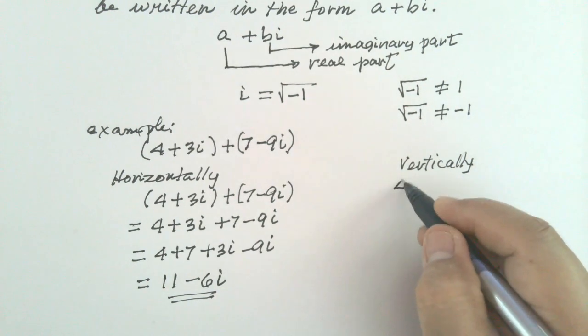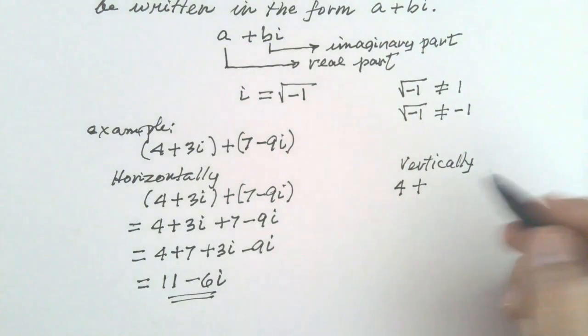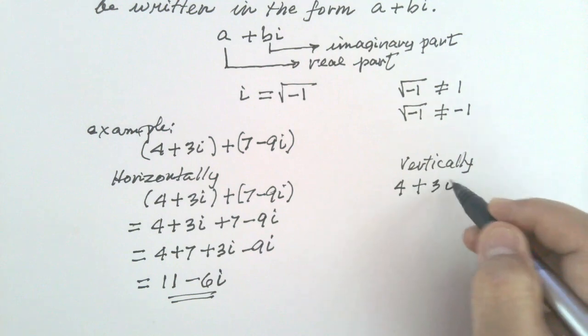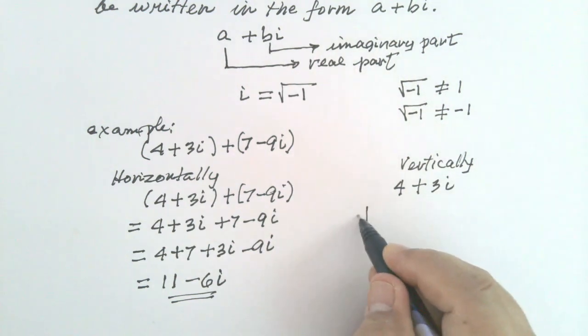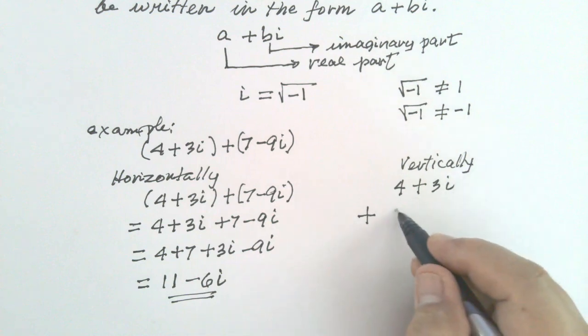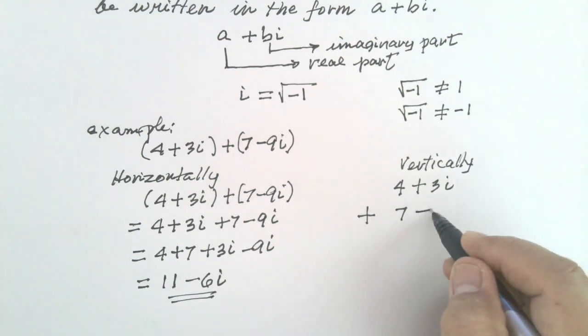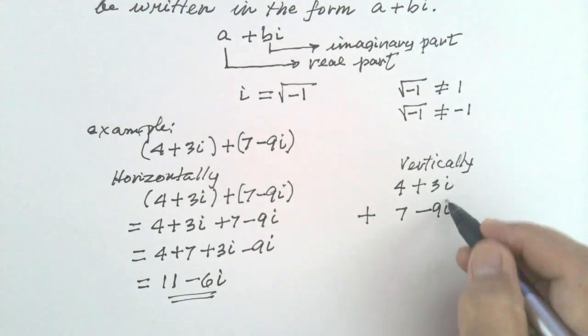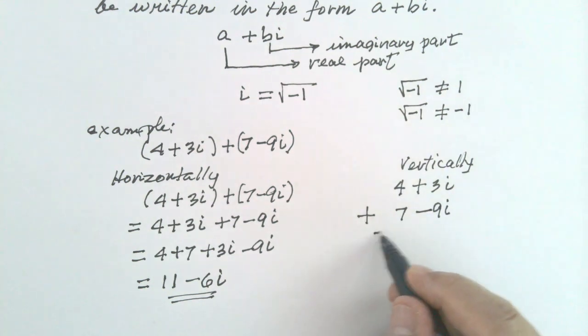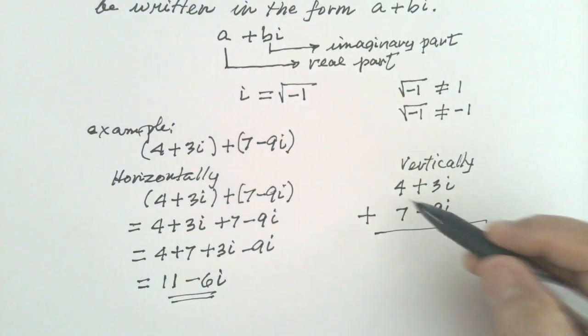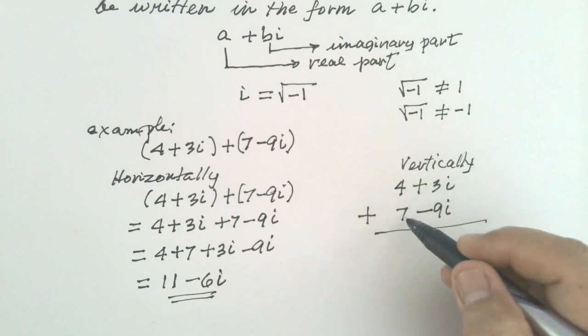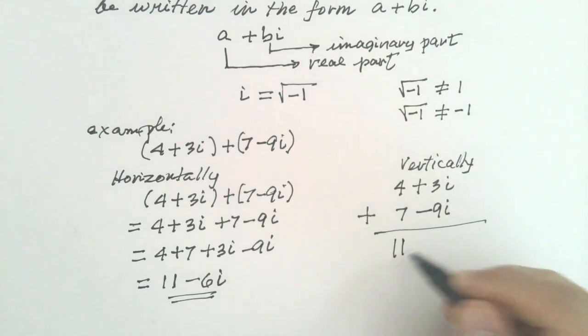So, 4 plus 3I, added to 7 minus 9I. Just add 4 to 7. 4 plus 7 is 11.